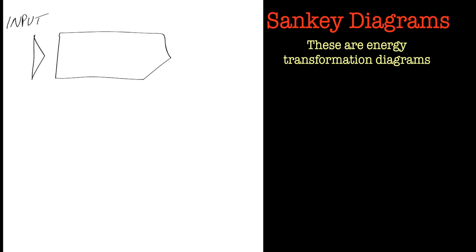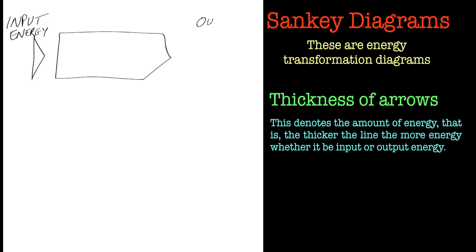In the Sankey diagram, the thickness of the arrows represents how much energy is being input or output, as you can see here. But what is this output? Well, let's have a look and break it down further.